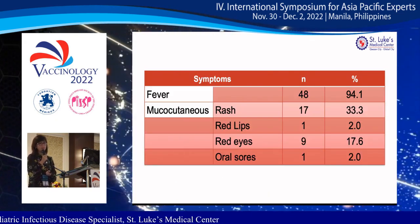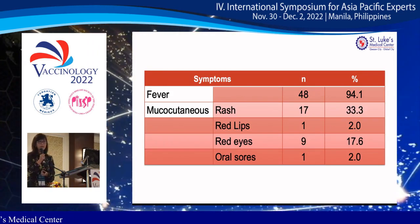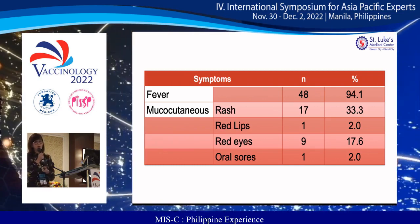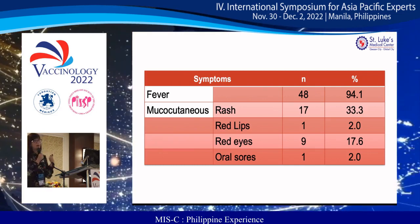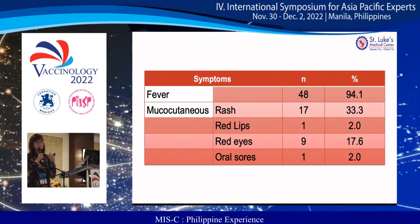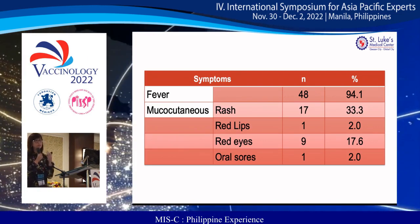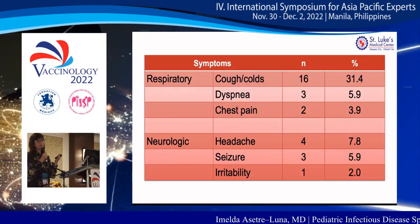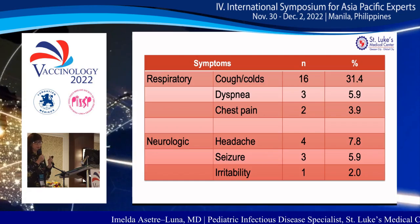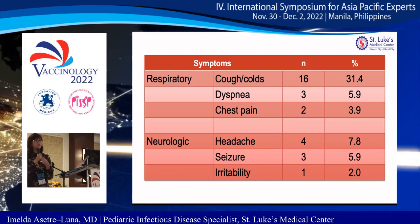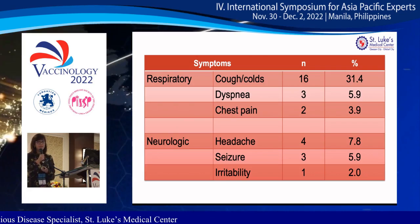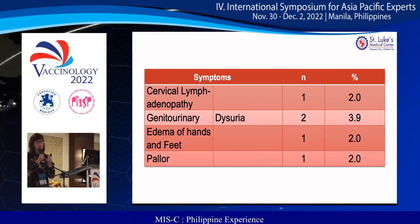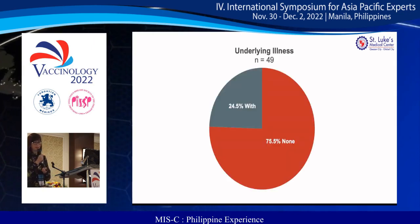When it comes to symptomatology, fever is the most common symptom. Among mucocutaneous symptoms, rash is the most prominent. Gastrointestinal symptoms are very prominent in MIS-C, with diarrhea being the most common. We also had a number with respiratory symptoms, a few with neurologic symptoms like headache, and very few with cervical lymphadenopathy, genitourinary symptoms, edema of hands and feet, and pallor.